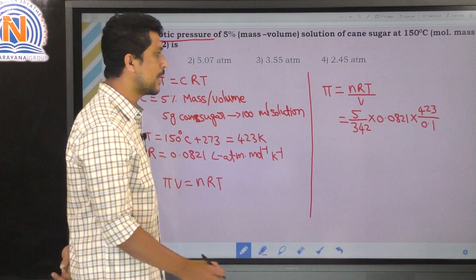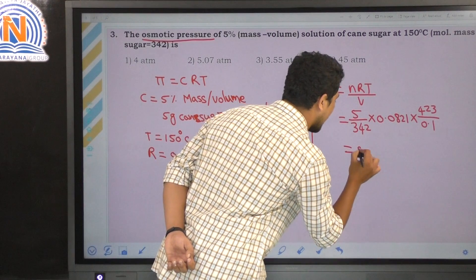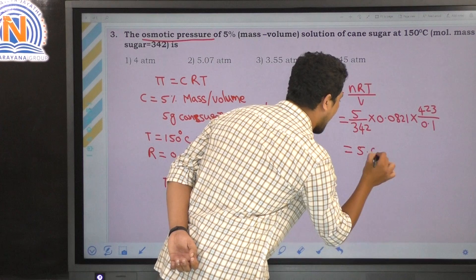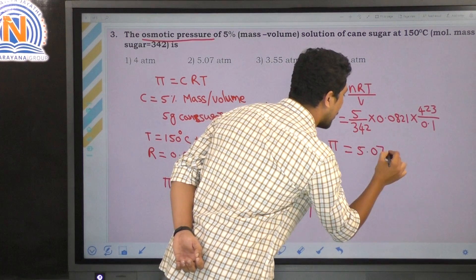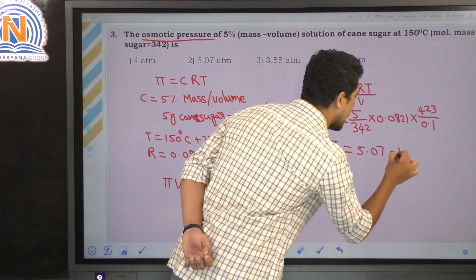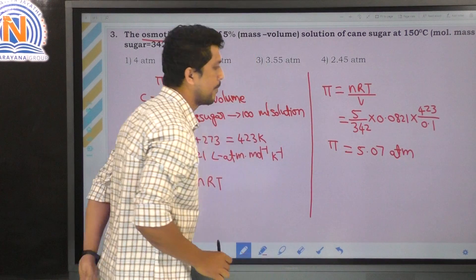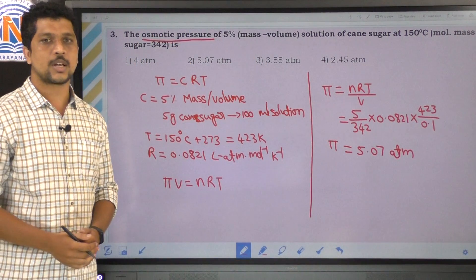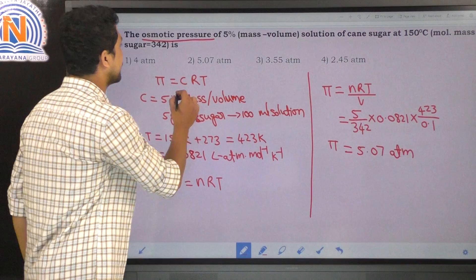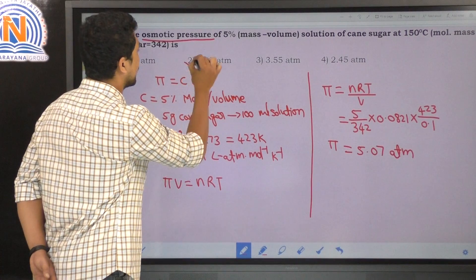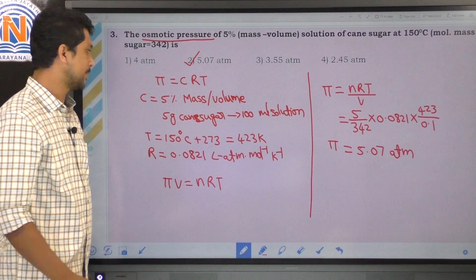Solving gives π = 5.07 atmospheres. The correct option is the second option.